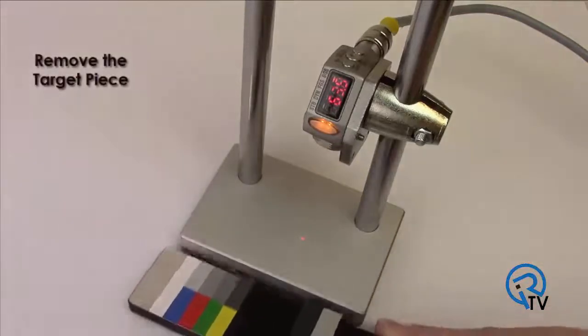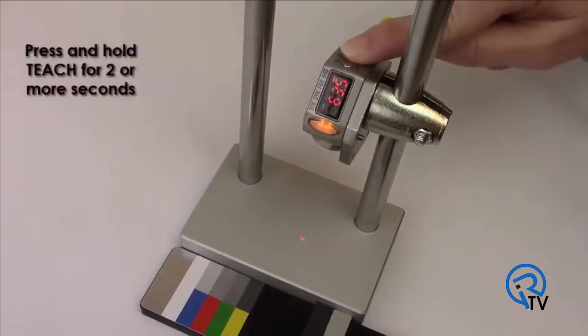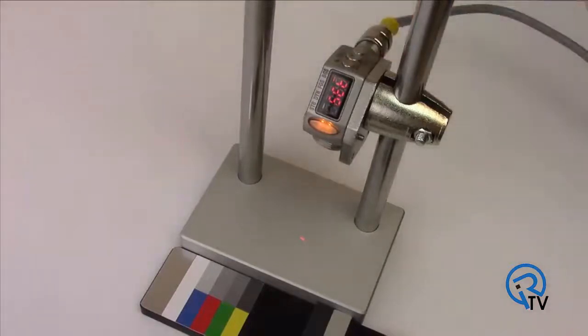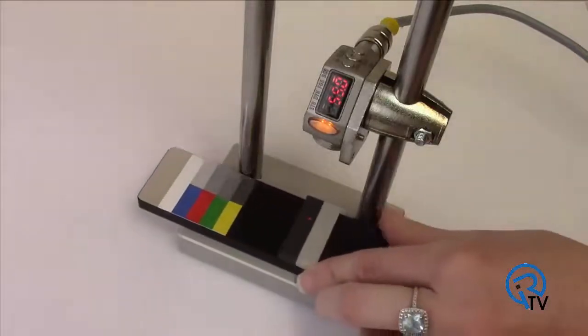Remove the target piece. Press and hold teach for two or more seconds. Then press teach again. The aluminum base is now the zero point. The sensor detects any part of the target but not the aluminum base.